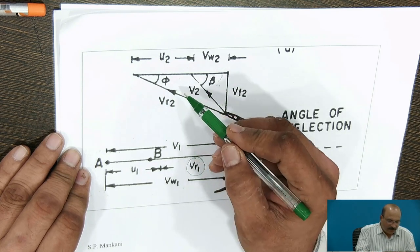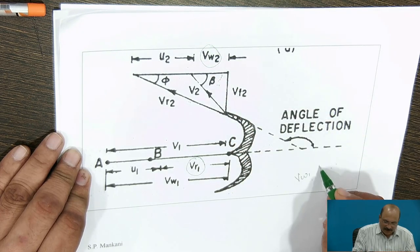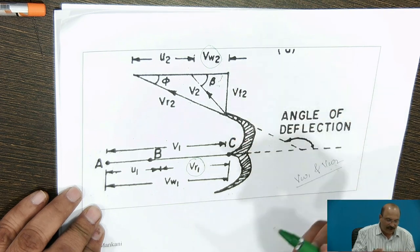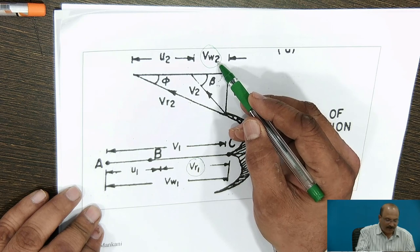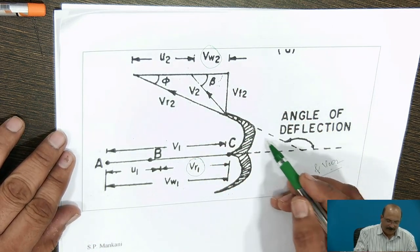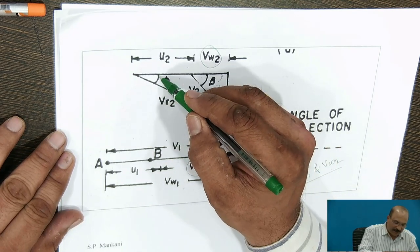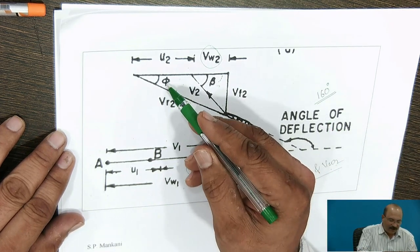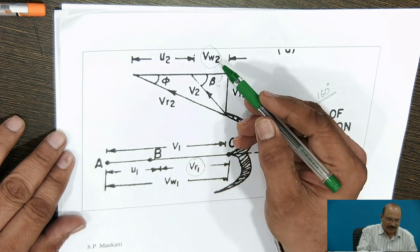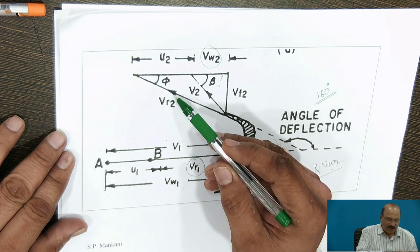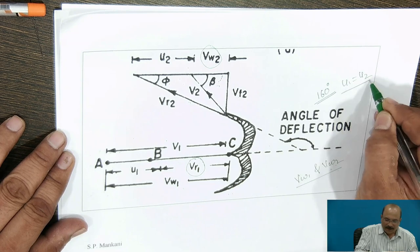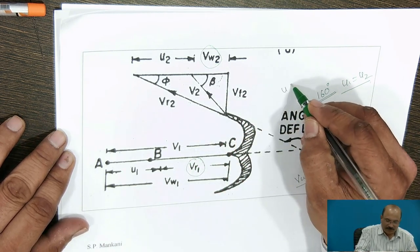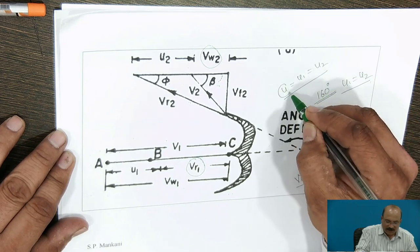Next we need to calculate VW2, since both VW1 and VW2 are required. VW1 is obtained from V1, and VW2 is calculated from the outlet velocity triangle. For calculating VW2, we refer to the angle phi. The angle of deflection is given as 160 degrees, so phi equals 180 minus 160 degrees. Using this phi angle, VW2 is calculated as VR2 cos(phi) minus U2, where U1 equals U2.